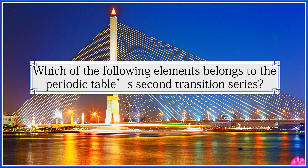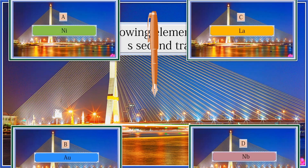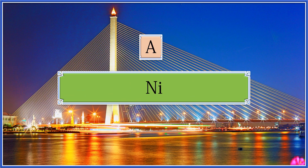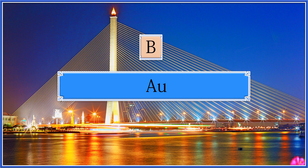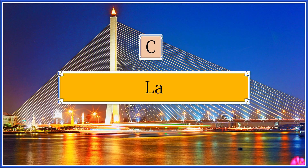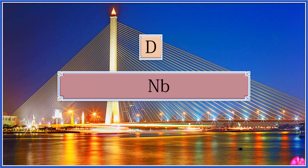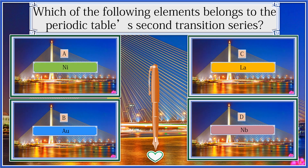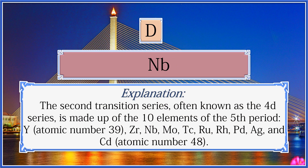Which of the following elements belong to the periodic table's second transition series? Nickel, gold, lanthanum, or niobium? The second transition series, often known as the 4D series, is made up of 10 elements of the 5th period — atomic number 39: Y, Zr, Nb, Mo, Tc, Ru, Rh, Pd, Ag, and Cd, through atomic number 48.